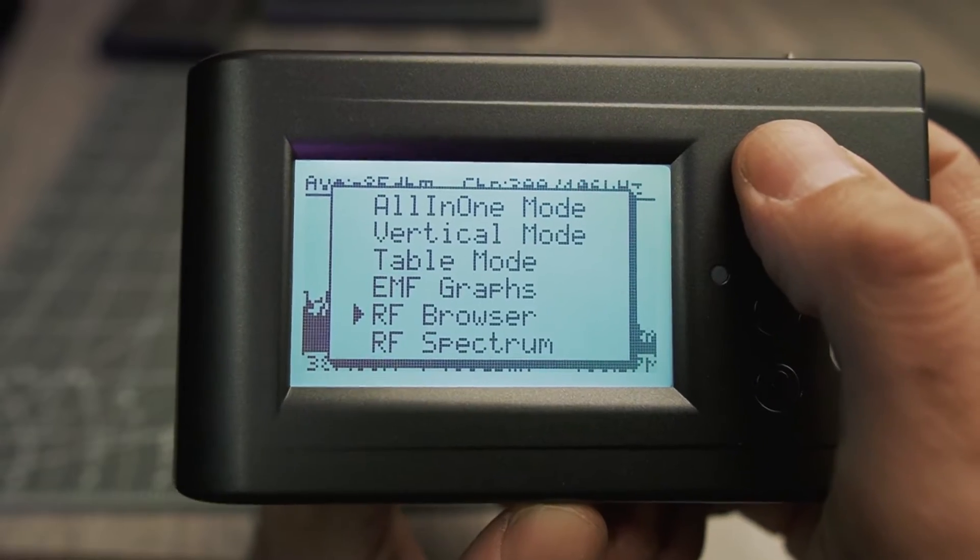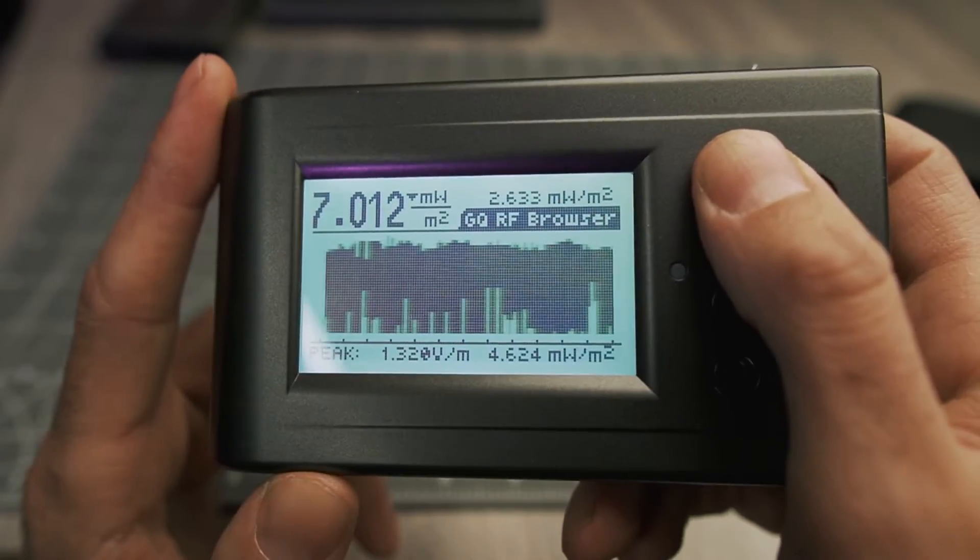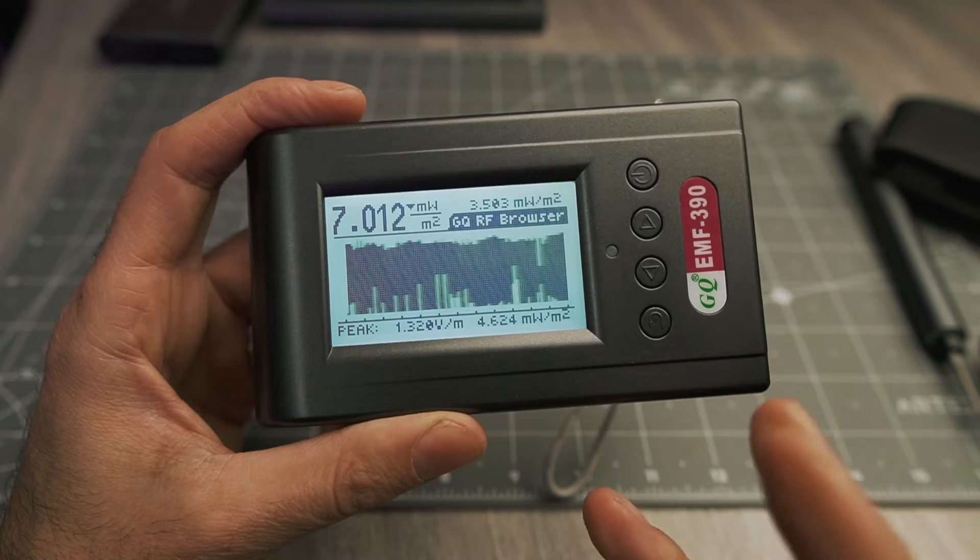But the RF browser mode shows you the total RF signal strength across all frequencies over time. In other words, you don't care which specific frequencies are emitting RF radiation, you just want to know the total RF signal being emitted over time.